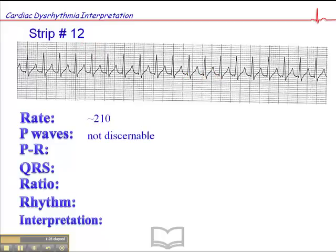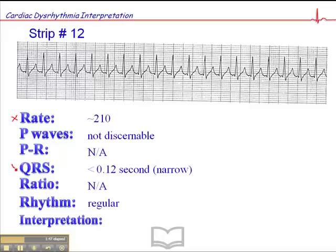The P interval is not applicable since we don't have P waves. This QRS is narrow — it's less than 0.12 seconds. The ratio is not applicable because we don't have P waves, only those glitches. The rhythm is irregular. So when you have a heart rate this high, no discernible P waves, and a narrow QRS, this can only be one thing: supraventricular tachycardia with a heart rate of 210 — SVT.